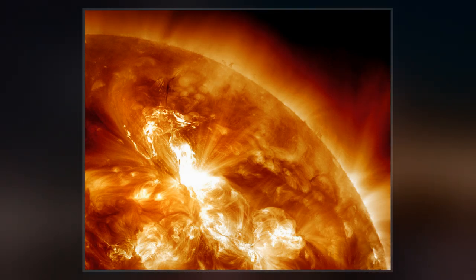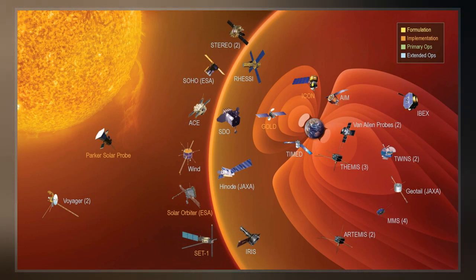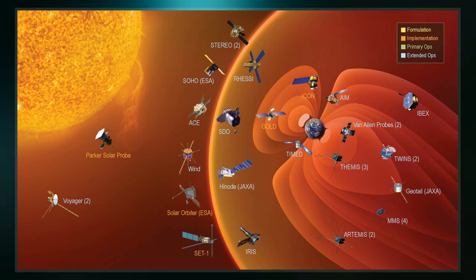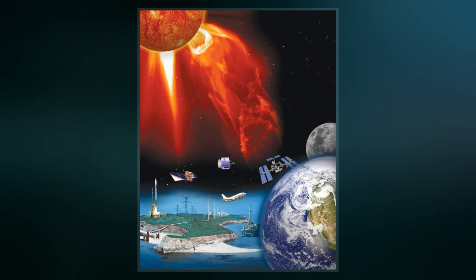The associated white light flare in the solar photosphere was observed and recorded by British astronomers Richard Carrington and Richard Hodgson. The storm caused strong auroral displays and wrought havoc with telegraph systems.